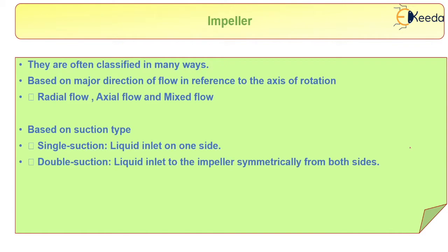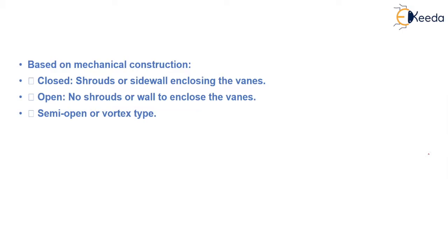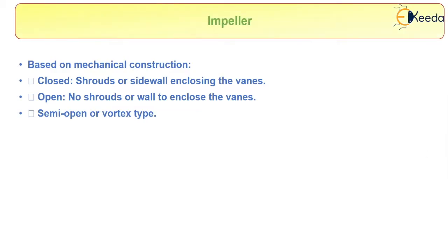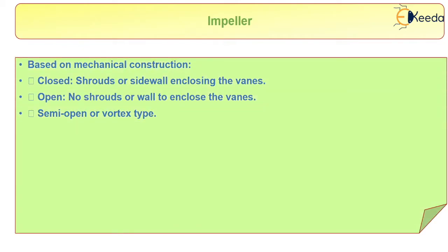Impellers are often classified in many ways. Based on the major direction of flow, they can be classified as radial flow, axial flow, or mixed flow. Based on the suction type, it can be single suction or double suction. Mechanically, it can be closed, open, semi-open, or semi-closed, also called the vortex type.